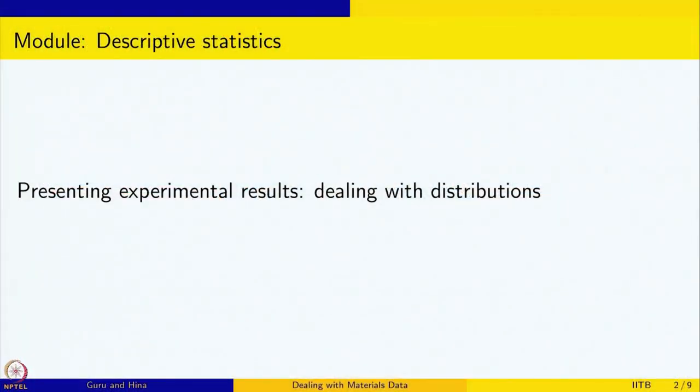Welcome to this course on Dealing with Materials Data. We are going to look at the Collection, Analysis and Interpretation of Materials Data. We have already done one module on Introduction to R and we are learning how to use R to do descriptive statistics. We are going to look at how to present experimental results, and we have already seen rank-based reports like histograms and dot charts, as well as summary-based reports like mean, standard deviation, variance, and quantiles.